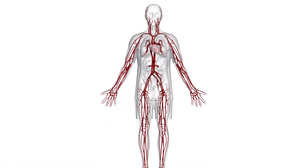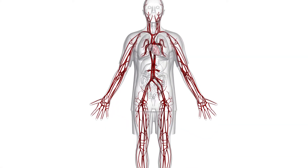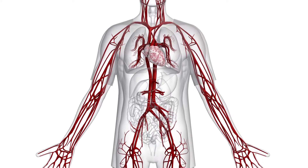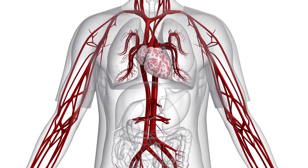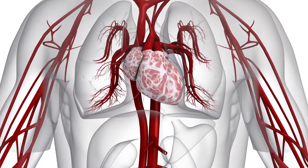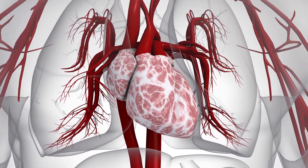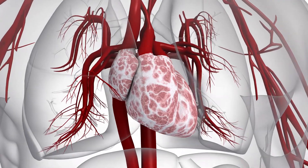Thrombosis is when blood clots form in your blood vessels. Normally these blood clots form in response to some kind of vessel injury, and when they form they can slow and even completely block blood flow to some of your important organs like the heart, the brain, your lungs and even your limbs.